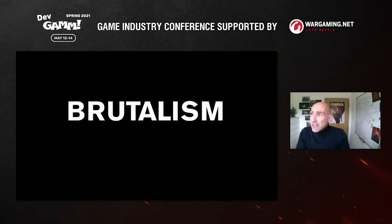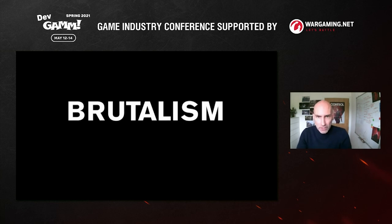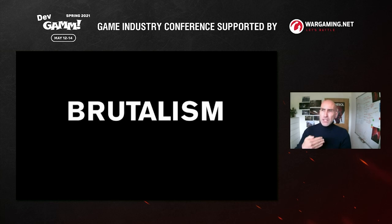The last world building element to cover is the architecture — one of the defining visual elements in Control's art direction. The architectural style we settled on was brutalism, which actually came from our game director Michael Kazarin, who suggested the style initially. It was a great choice; there was a growing trend — a lot more interest in brutalism on Instagram and culturally — so it felt very on tone with awareness of it these days.